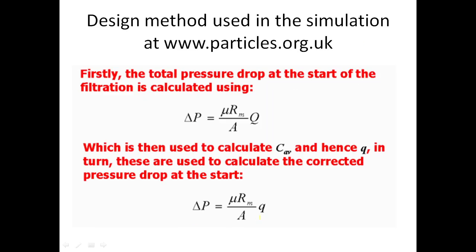How do we start the iterative solution? At the very start of the filtration — and this is only applicable at the start — we have no cake, so we can use capital Q without accounting for deposited material. The total pressure drop is simply the pressure drop over the filter medium, and therefore if we know the filter medium resistance we can work that out for a given feed rate. Once we have that, we can do our calculations for concentrations and correct for the filtrate rate rather than the feed rate.